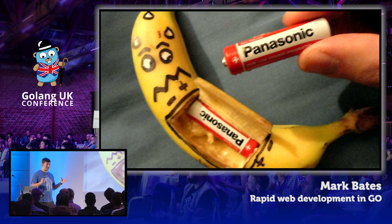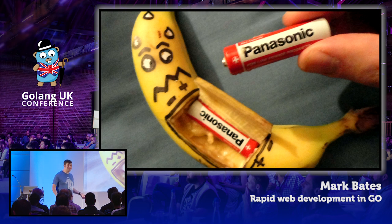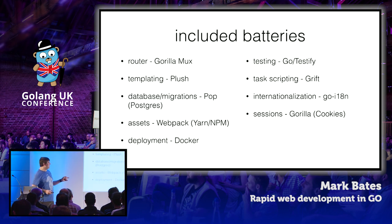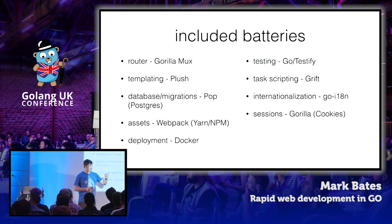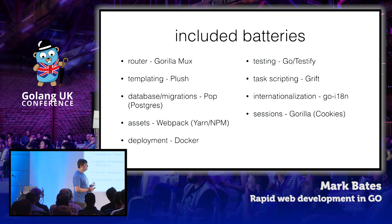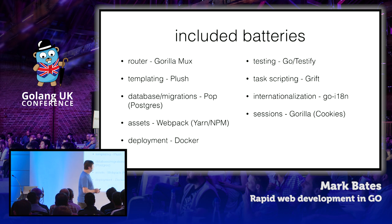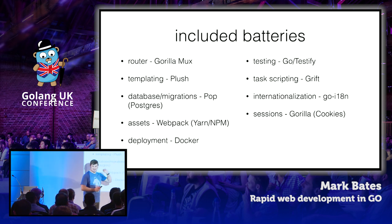Buffalo is a batteries-included framework. But when I say batteries included, I actually mean all of the batteries — not just the Go batteries. Here are some of the included batteries: Gorilla Mux for routing, Plush for templating, Pop for database, Webpack and Yarn for our asset pipeline. For deployment, we've got things like Docker and Buffalo Build. For testing, we've got Go and some Testify. Task scripting — we've got an amazing system called Grift. Internationalization, sessions — the whole nine yards.